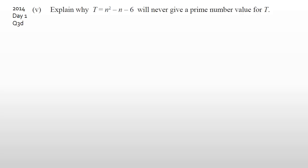For the last question, they're asking you to explain why T will never give a prime number. Even if you don't know how to approach it, if you see a quadratic, factorize it — you might get an achieved grade from that alone. Factorizing T, I'm looking for two numbers that multiply to negative 6 and add to negative 1 — that's negative 3 and plus 2. Getting to that factorized form straight away gives you an achieved grade.